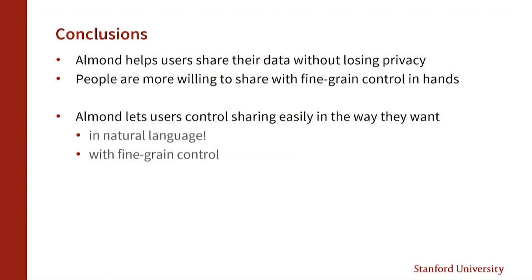In conclusion, we have shown that Almond helps users share their data without losing privacy. People are significantly more willing to share if fine-grained control is in their hands. And Almond lets users control sharing easily in natural language with fine-grained control.